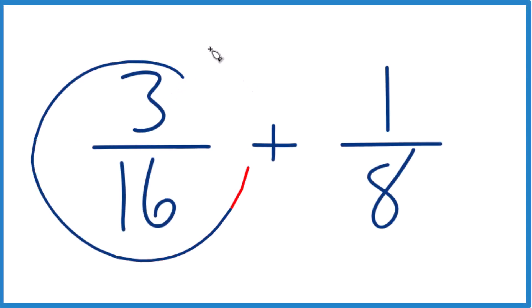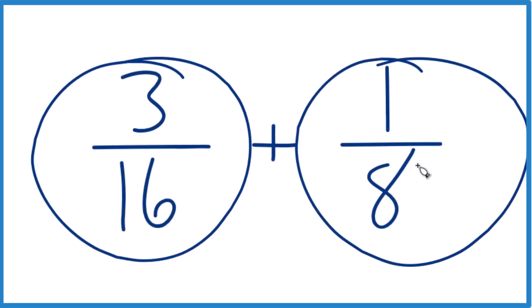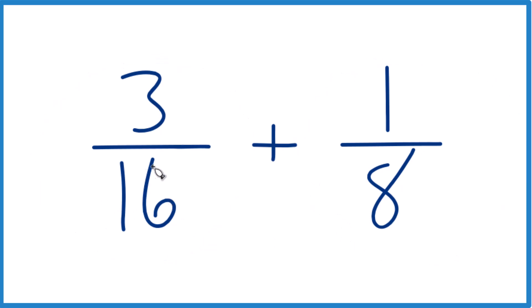Here's how you can find 3/16 plus 1/8. The key: we need to get these denominators the same. Then we'll just add the numerators and we'll be done.